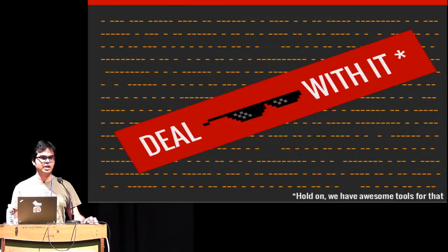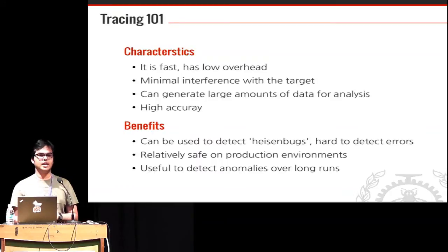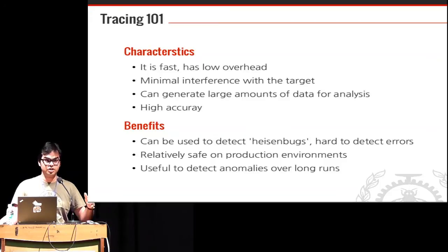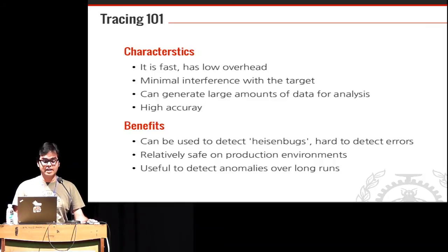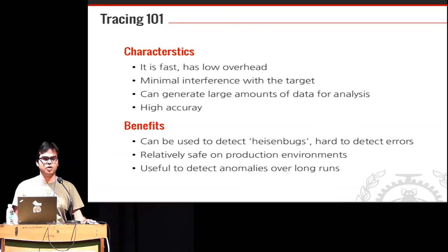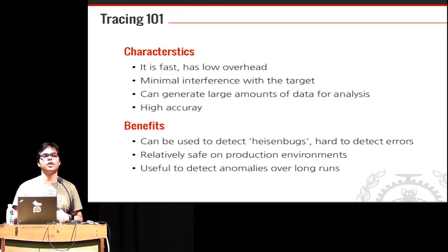With millions of events it becomes very difficult to analyze, but we are going to do something about it. First, let's analyze what a tracer is. A tracer should be fast — it should not alter the performance or output of your program. It has low overhead, it should not interfere with the target, and it will obviously generate large amounts of data. A tracer also has high accuracy — timestamps must be very precise.